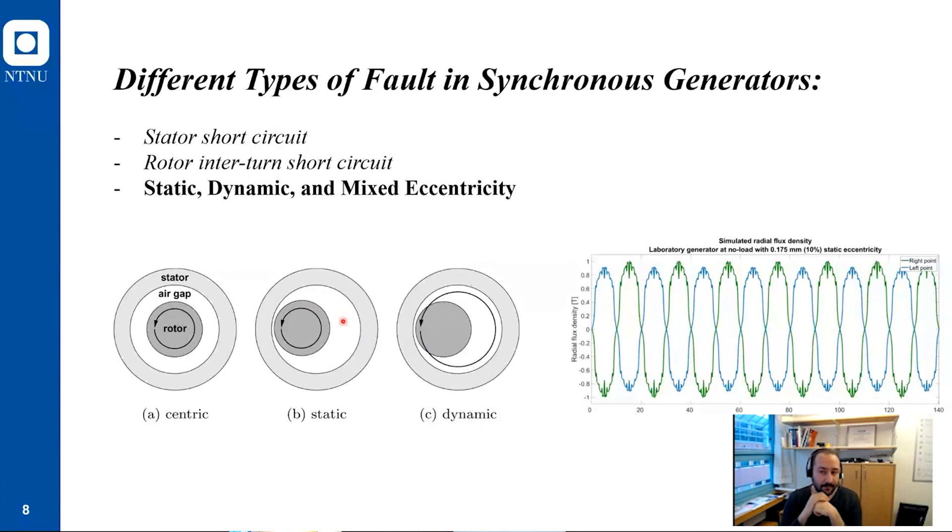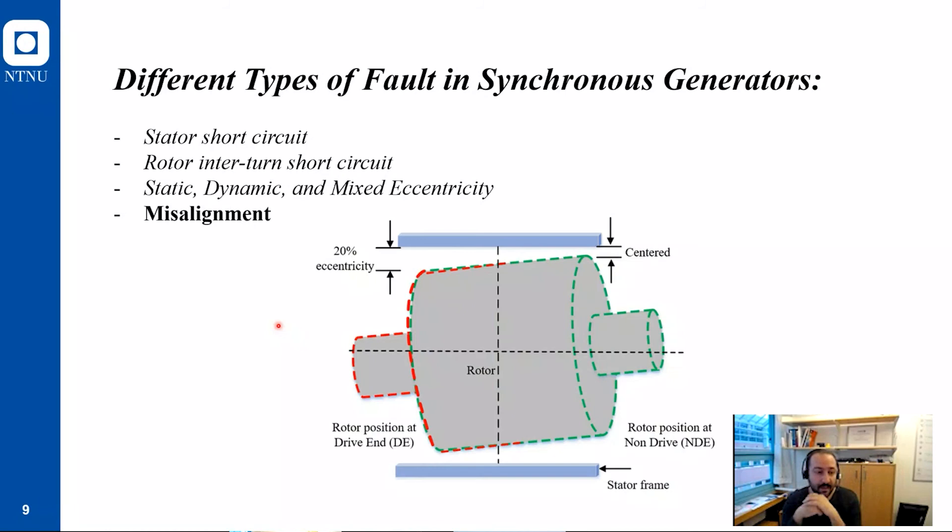The third type of fault is eccentricity faults. The machine, the rotor, is supposed to rotate exactly at the center of the machine. But when we have a static or dynamic eccentricity fault, the rotor is closer to the stator, and in the worst case it could touch the stator and the machine will stop. The other type of fault is misalignment. It's a combination of static and dynamic eccentricity fault, but the rotor in an axial direction is also tilted. This fault is kind of a worse type of static and dynamic eccentricity fault.